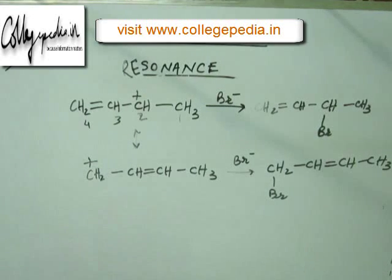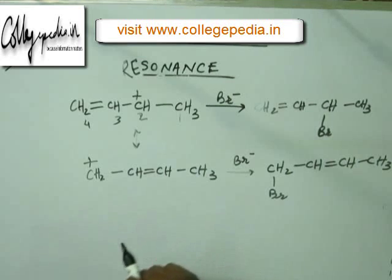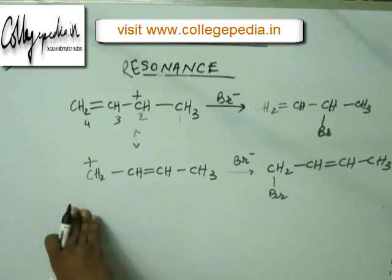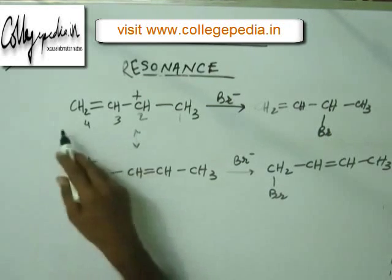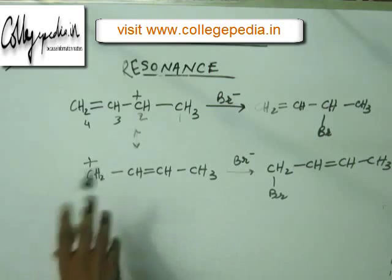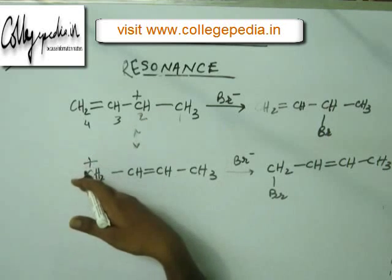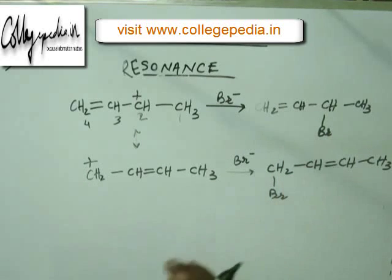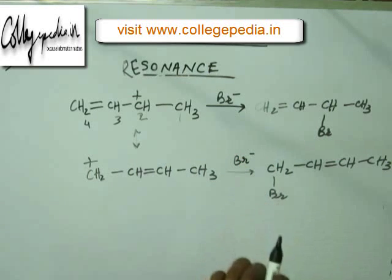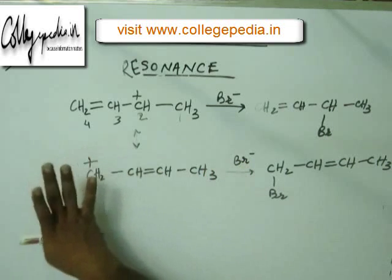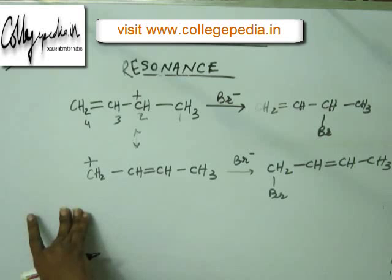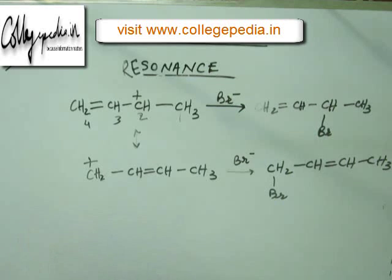This is the next level of application of resonance — you decide the number of products and you decide the major and minor products. We haven't seen how to decide major and minor yet, but all we understand up till now is the number of products can be decided on the basis of resonance. In one resonating structure the charge is at C2; in the other it is at C4. We know the charge will be shared between C2 and C4, so correspondingly you will have two products. This is another application of resonance: identifying the number of possible products.